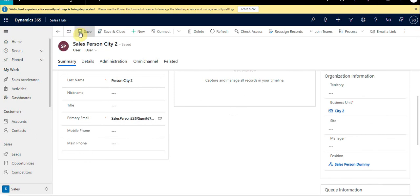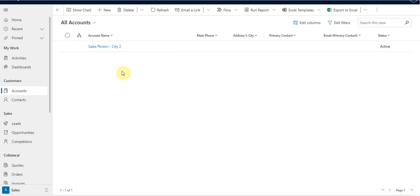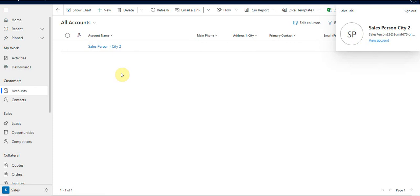By doing this I have removed the relationship between salesperson one-one and salesperson two. Salesperson one-one is no longer reporting to salesperson two, because salesperson two has been allocated a new position. Now if we log into the application using salesperson two's credentials, they should not be able to see the record owned by salesperson one-one — and indeed, you can see they can no longer see the record they were able to see earlier.